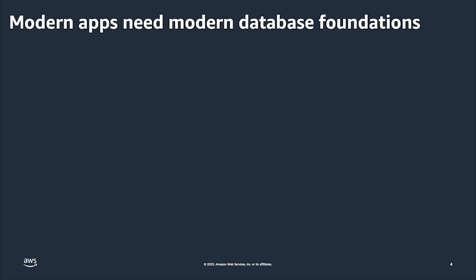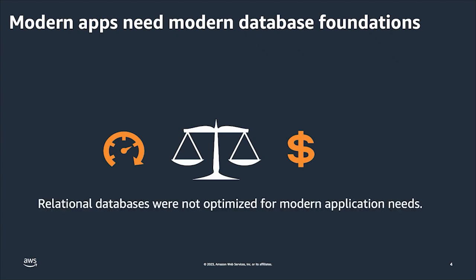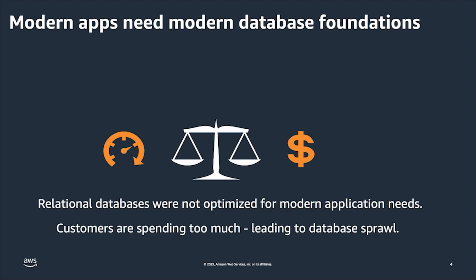Modern applications need modern database foundations. In the application stack, access to data to and from the database is usually the performance bottleneck, but customers can't throw endless money at performance — it's a balance. Most database foundations are built on relational databases, a very proven and solid technology, but they simply were not built for many modern application use cases. They tend to have monolithic data structures and can't accommodate a variety of data types, and weren't designed for millions of concurrent users. So many customers are throwing money at the problem by adding more or larger instances, more read replicas, or adding a performance cache, which complicates the architecture — all leading to database sprawl.